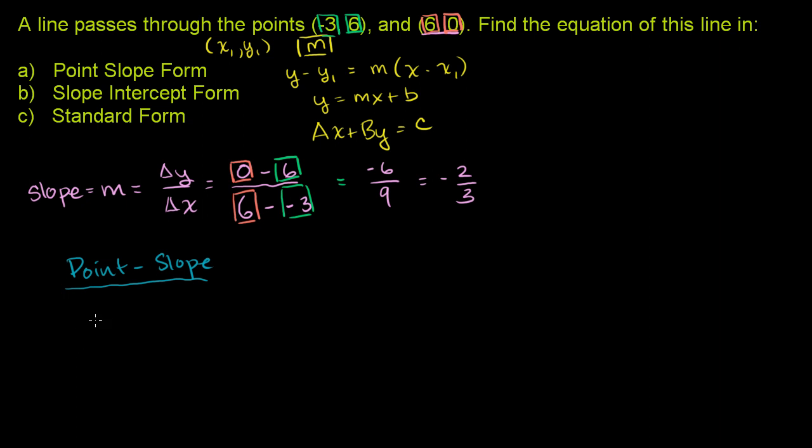So let's put it in point-slope form. All we have to do is we say y minus, now we could have taken either of these points, I'll take this one. So y - 6 is equal to our slope, which is -2/3 times x minus our x-coordinate. So x - (-3). And we're done. We can simplify it a little bit. This becomes y - 6 = -2/3(x + 3). This is our point-slope form.